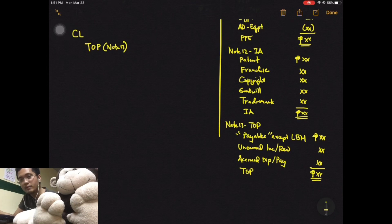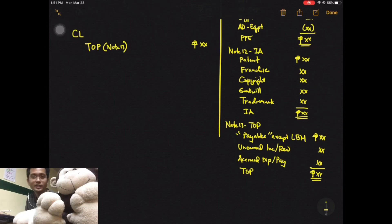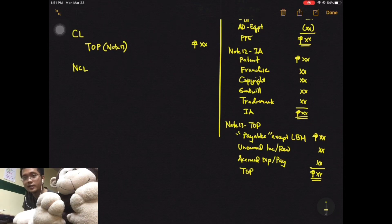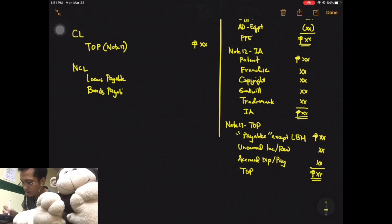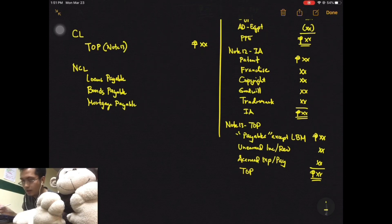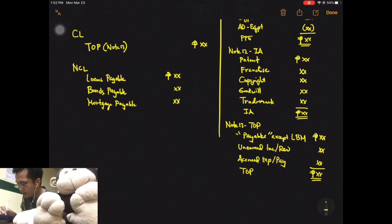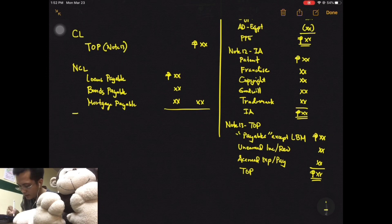Since this is one line item under current liabilities, write it in the last column. After current liabilities, prepare non-current liabilities, which includes LBM: loans payable, bonds payable, and mortgage payable. These account titles, if silent, are assumed to be non-current. Since there are three, list them first then write the total beside. Get the total of current and non-current liabilities for total liabilities.